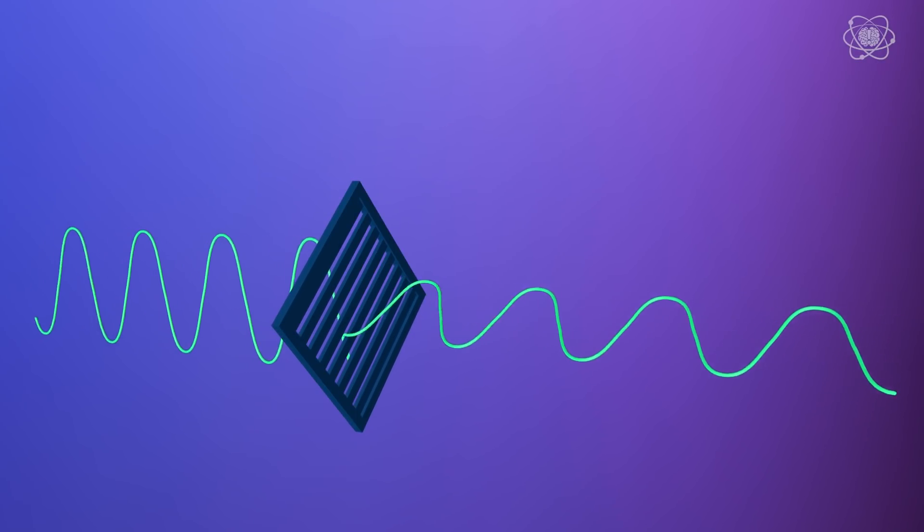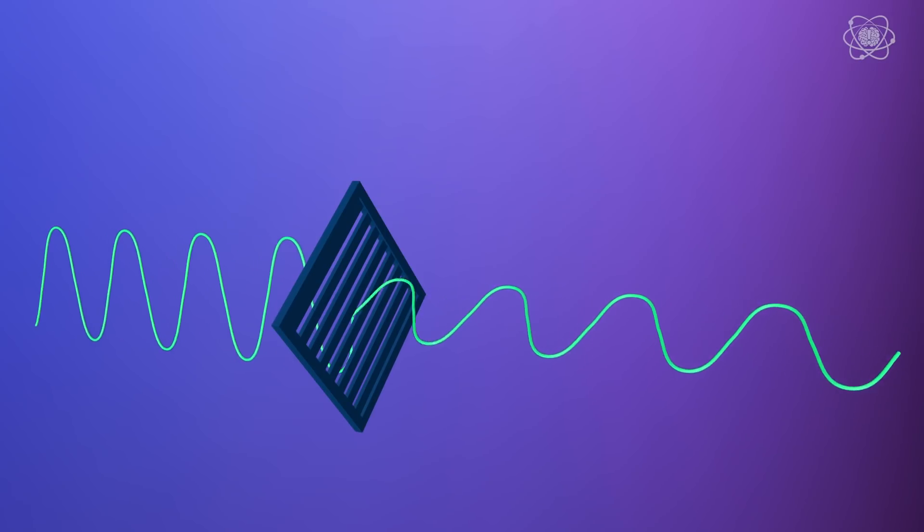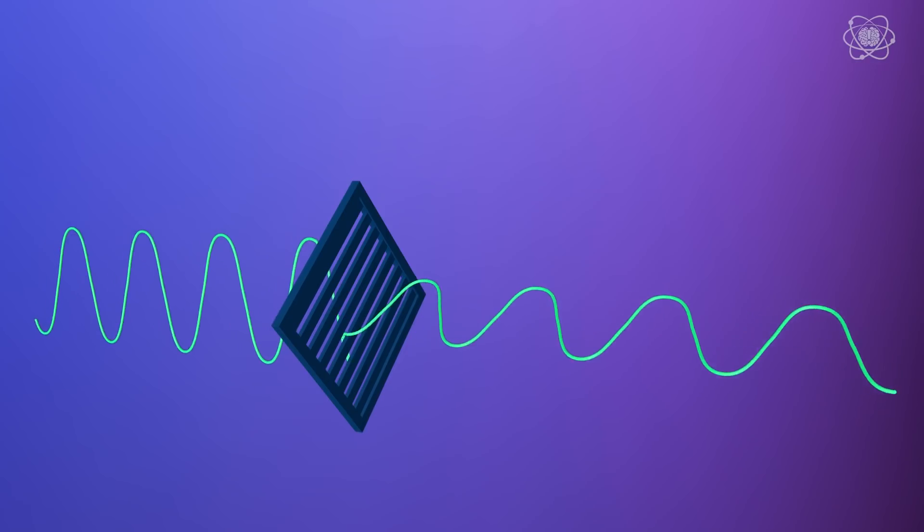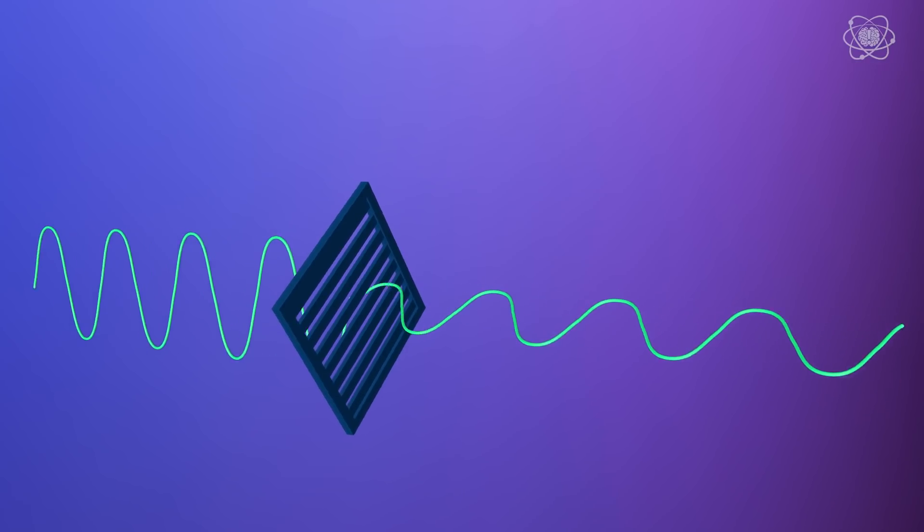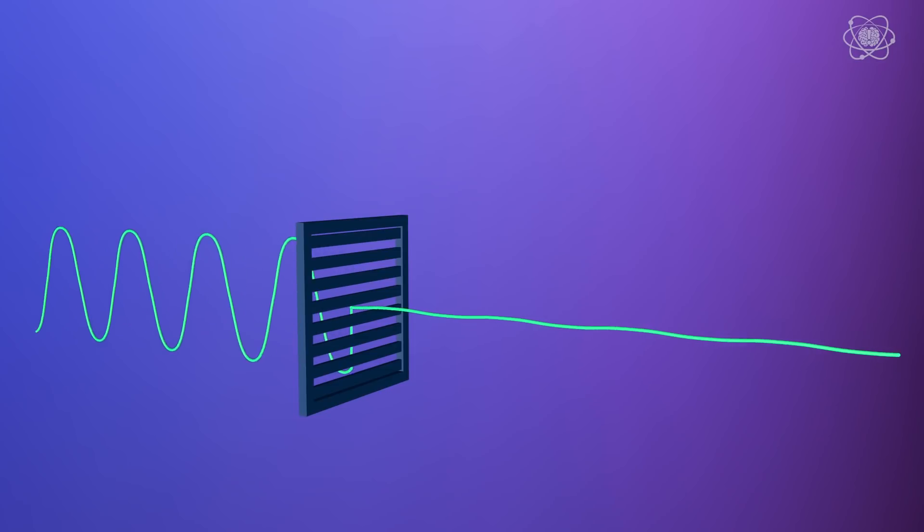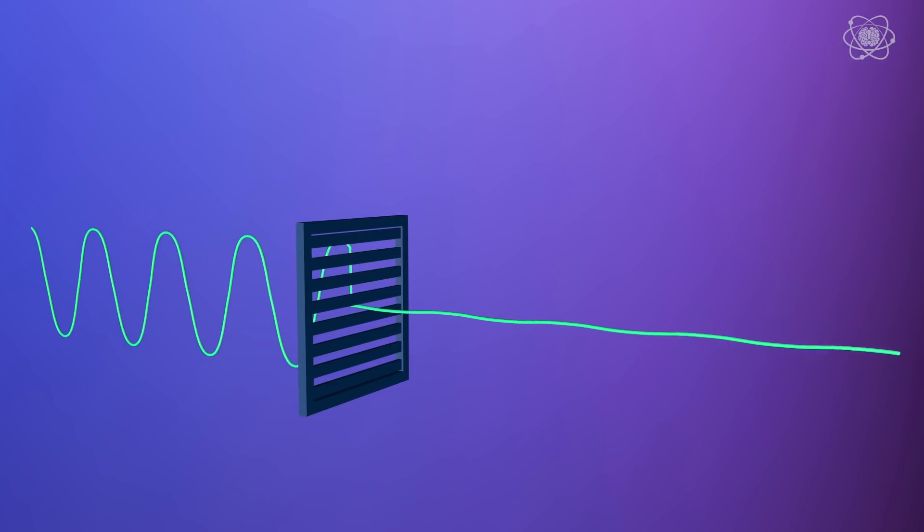Not only do the bars limit the wave, but the part of the transverse wave that does make it through to the other side is now parallel to the bars it passed through. If we rotate the window a full 90 degrees, the biggest a transverse wave could ever be is determined by the distance between those bars in the window. This is exactly how a polarizing filter works.